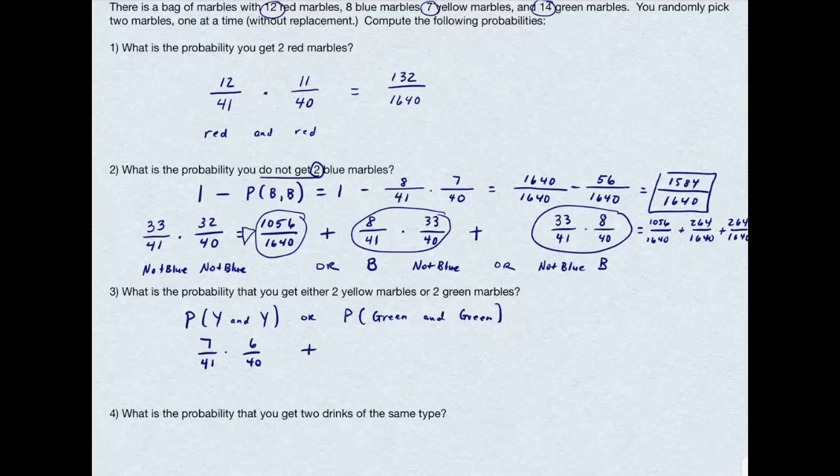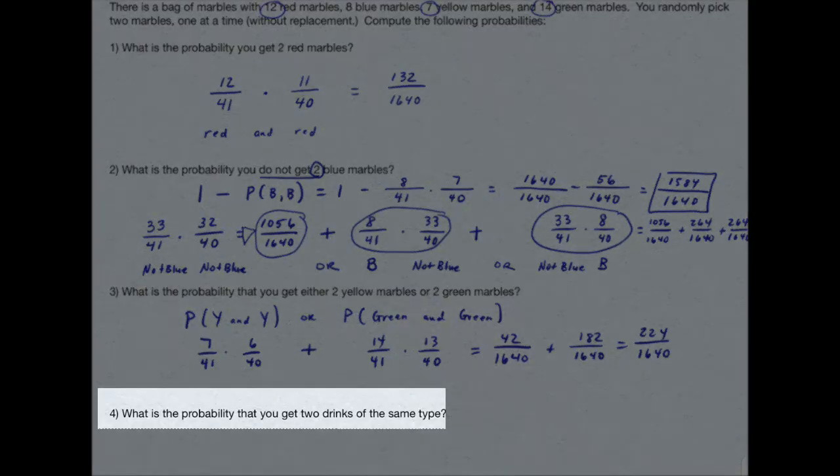And the probability of me getting a green marble is 14 divided by 41, and then the second one being green is 13 out of 40. Those two fractions are 42 divided by 1640, plus 182 divided by 1640, which equals 224 divided by 1640.